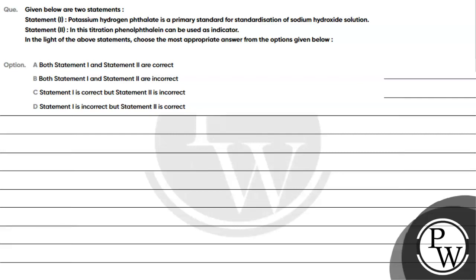Let's read this question. Given below are two statements. Statement 1: KHP (potassium hydrogen phthalate) is a primary standard for standardization of sodium hydroxide solution. Statement 2: In this titration, phenolphthalein can be used as an indicator. In the light of the above statements, choose the most appropriate answer from the options given below.